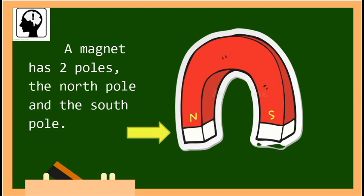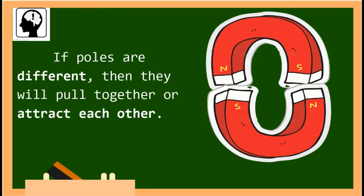A magnet has two poles: the north pole and the south pole. When the poles of two magnets are put near each other, they have a force that will either pull them together or push them apart.